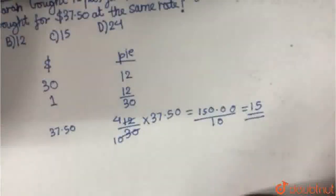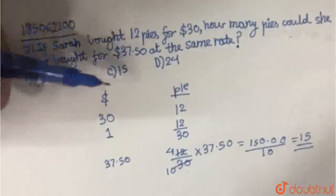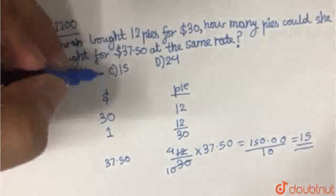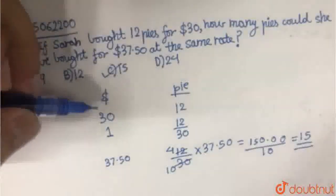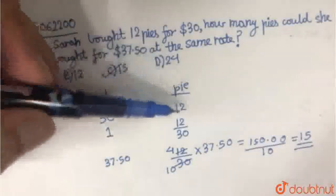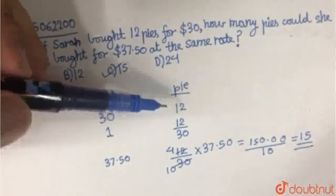So what does our answer come out to be? Our answer is 15. Is 15 in the options? Yes. Option C is 15. So option C becomes our answer. Simple unitary method, wherein we take dollars and find the number of pies that could be bought with that amount. Thank you.